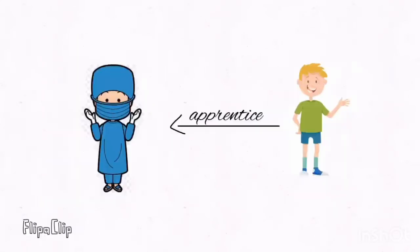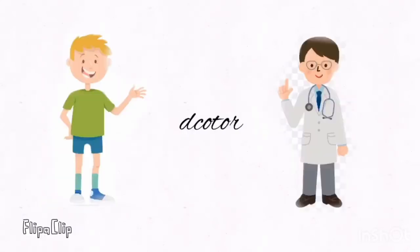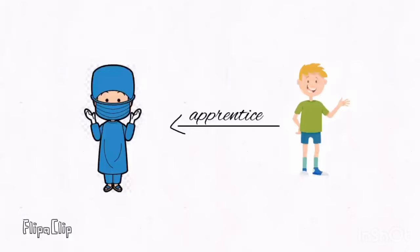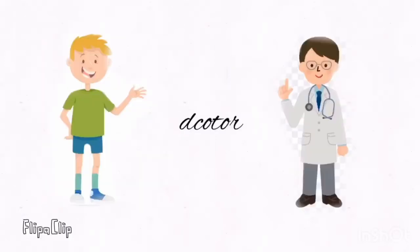He became the apprentice of a local surgeon at the young age of 14 and moved to London for further training, where he became the house pupil of John Hunter. John Hunter's advice, 'Why think? Why not experiment?' stuck with Jenner through all his future studies.